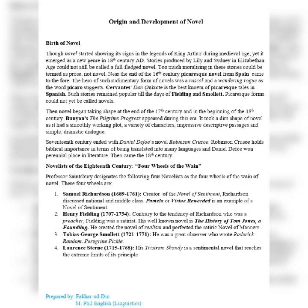We start from the medieval age. The medieval age roughly starts from the fifth century and ends at the 15th century. This age is not particularly specified for the birth of the novel, but we see that in the legends and ballads of King Arthur during that period, stories make somewhat a birth into a novel. Yet it emerged as a new genre in the 18th century AD, so its complete birth we find in the 18th century.